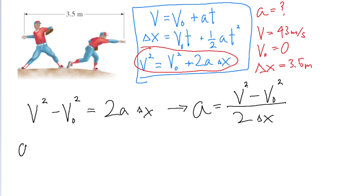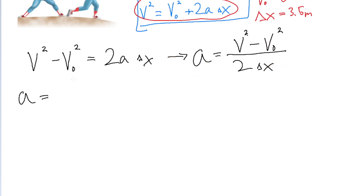So all that's left for us to do is plug in the values that we know that were given in the problem. So first the square of v, that's the square of 43 meters per second, minus the square of the initial speed, which is 0, all divided by 2 multiplied by the displacement of the ball, which is 3.5 meters.